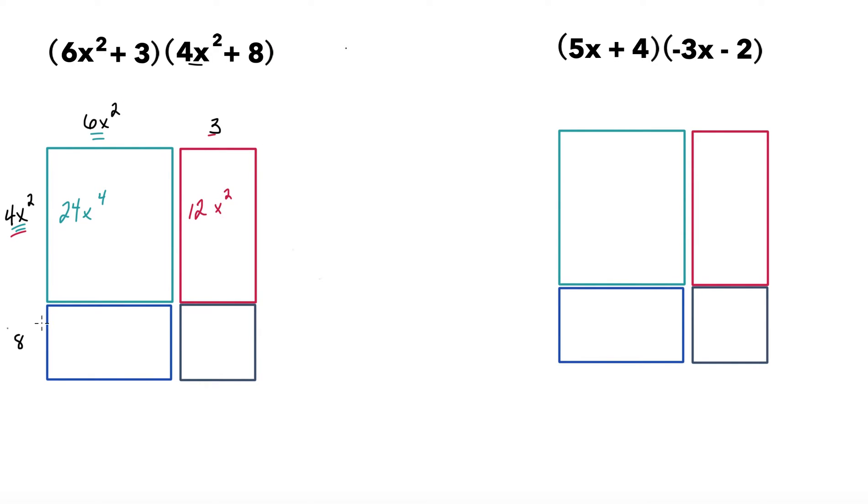Down here, we have 8 times 6x², which is 48x². And then finally, the little bottom corner, 8 times 3 is 24. Now that we have found each of the components of this rectangle, it's time to put them all together to find the entire area.